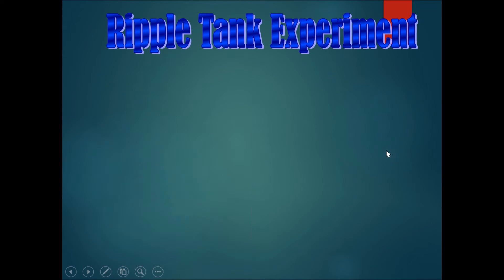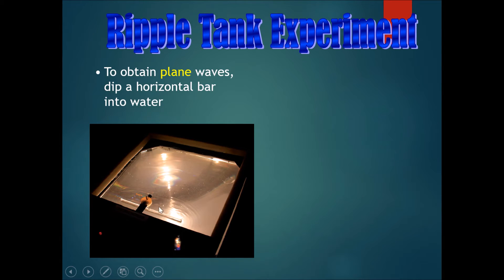To obtain plane waves, we have this thing called a ripple tank, where there's a bar, and this bar goes up and down and vibrates. This causes waves to go across. If you use a bar, you will be able to obtain plane waves, which is a flat wave that goes across. You can see each of these are wavefronts.